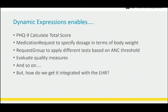This overall framework enables lots of use cases. I can calculate PHQ-9 total score on a questionnaire. I can build a medication request that specifies dosage in terms of the body weight of the patient rather than a static value. I can use a request group to apply different tests based on ANC threshold and neutrophil count. I can evaluate quality measures, and so on. But how do we actually get that integrated with the EHR? I'd like to be able to call that from an EHR, especially in this workflow — I want to hit this from the medication prescribed event.